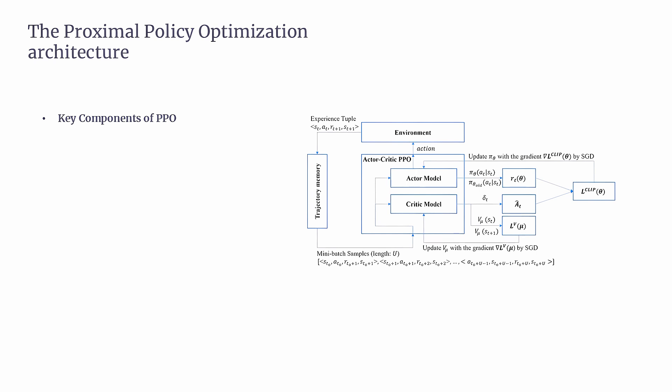Let's break PPO down into its essential parts. First, the Policy Function. The policy function is like the agent's brain — it decides what action to take based on the current state. The ultimate goal is to train this brain to maximize cumulative rewards over time. Second, the Advantage Function. This function helps us evaluate how much better a specific action is compared to the average action. It's like asking, 'Was this action a good idea given the situation?' The Advantage Function guides the updates we make to the policy.